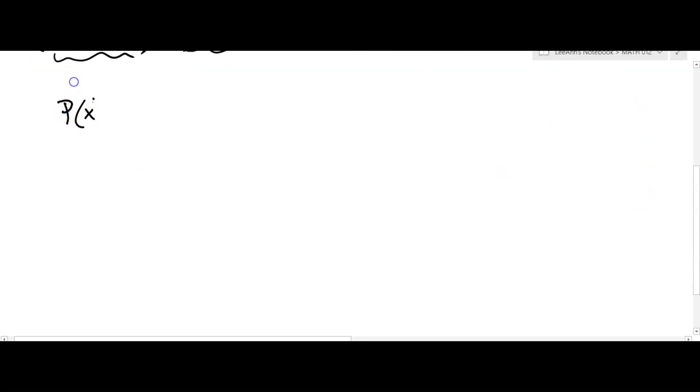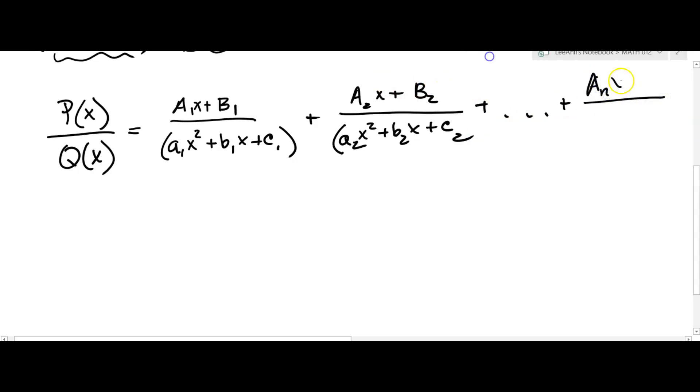Now here's the general notation. So if you have p of x over q of x and it's following these rules where you have distinct irreducible quadratic factors and we don't know how many you have, so you have n factors, then it's gonna be a sub 1 x plus b sub 1 over a1 x squared plus b sub 1 x plus c sub 1, plus the next one would be a sub 2 x plus b sub 2 over a sub 2 x squared plus b sub 2 x plus c sub 2. You keep doing that, following the pattern with the subscripts until you get to your last one, which would be a sub n x plus b sub n over a sub n x squared plus b sub n x plus c sub n. That would be the general form.